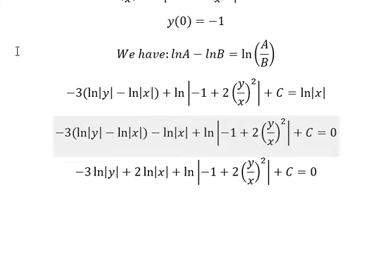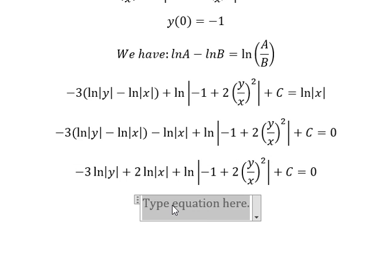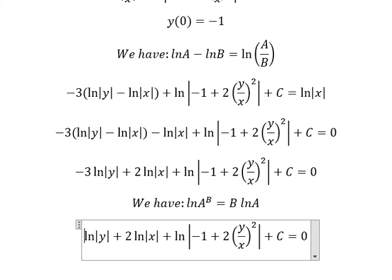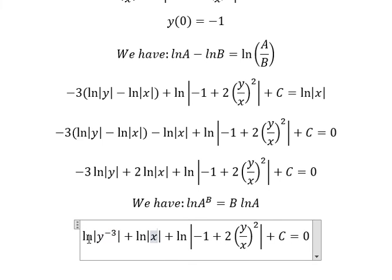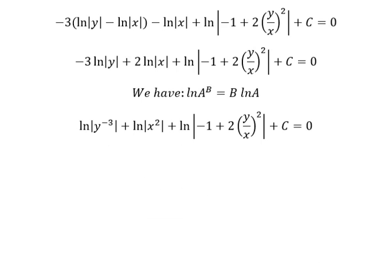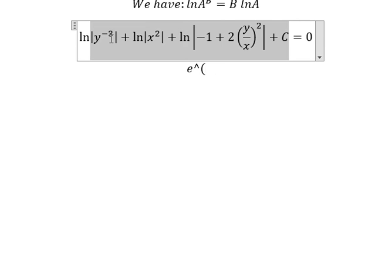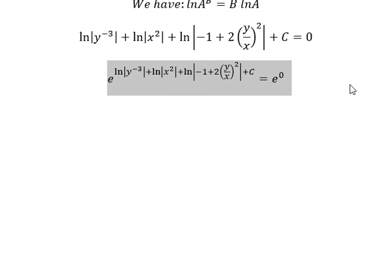Next I will put E for both sides. Before we use E, I need to bring negative 3 and positive 2 inside the natural log. So this one we can put like this, simplifying the expression accordingly.